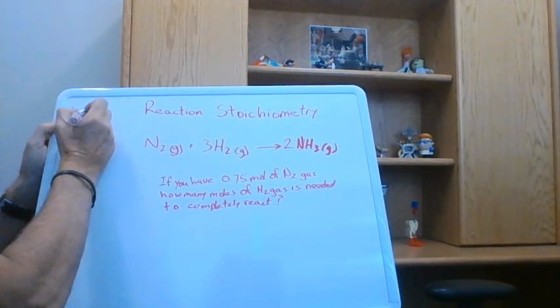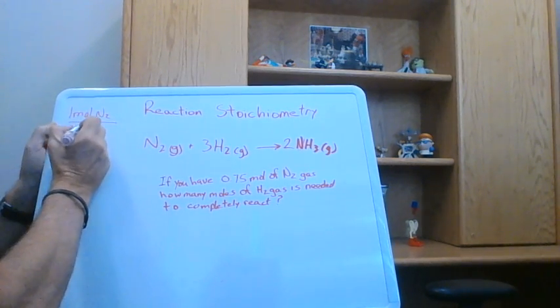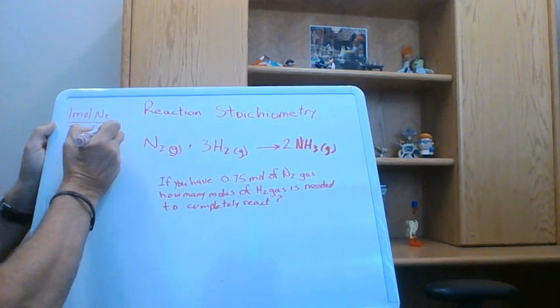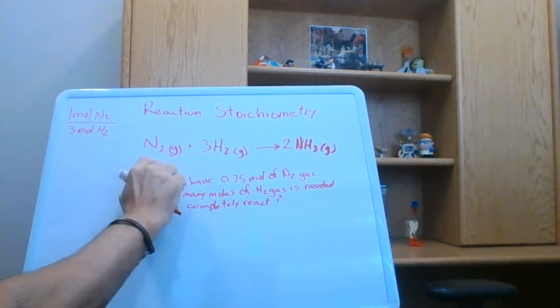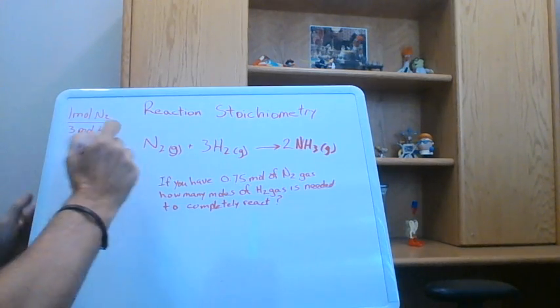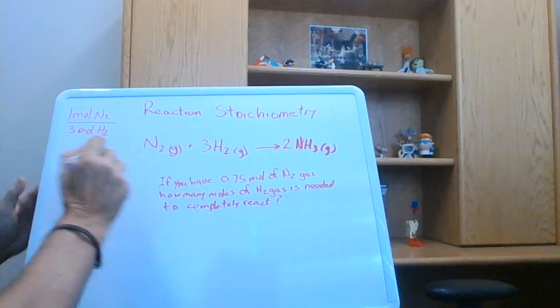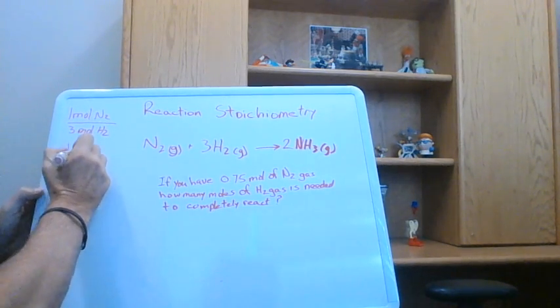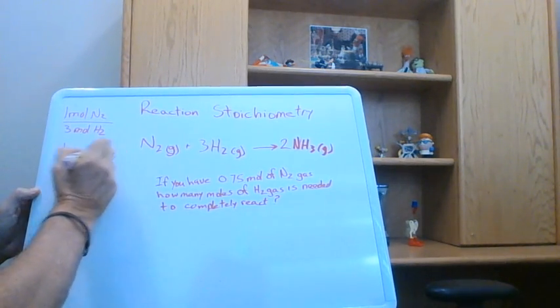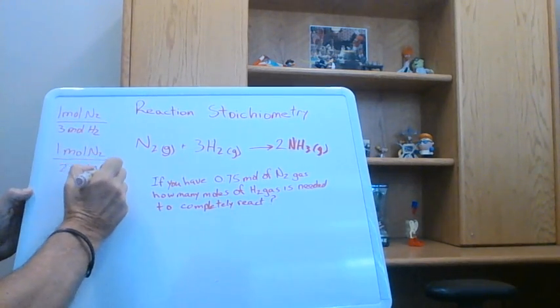So this tells us that one mole of N2 is equivalent to three moles of H2. So that's the relationship between nitrogen and hydrogen within the reactants. We also can see that if we have one mole of N2, then we're going to produce two moles here. So one mole of N2, we'd end up producing two moles of NH3.